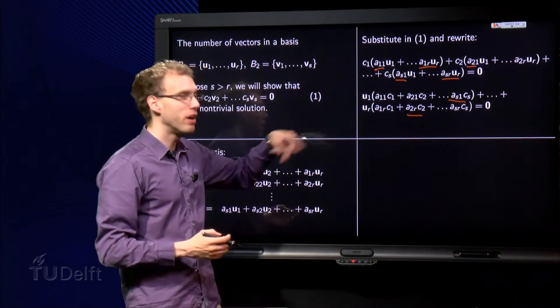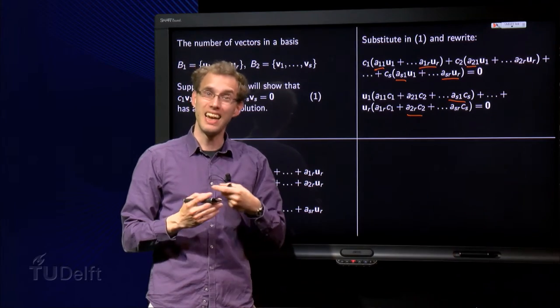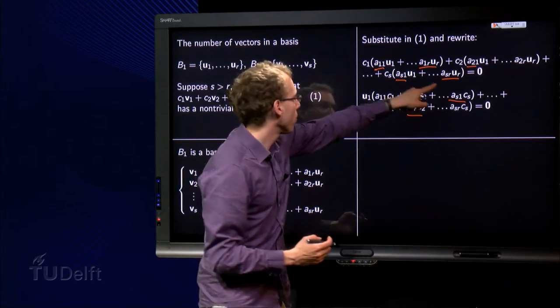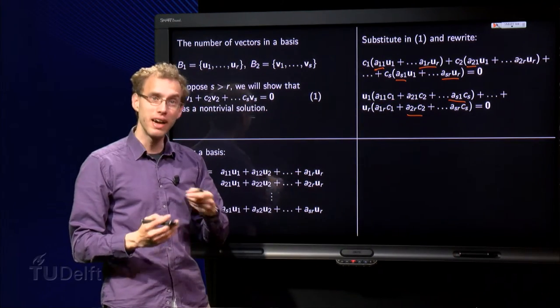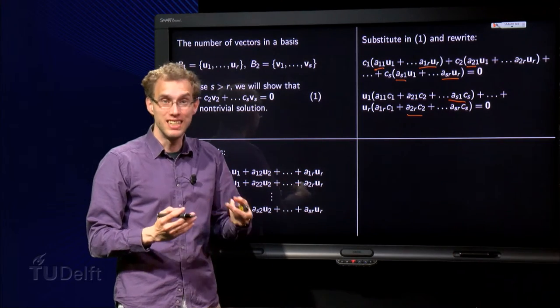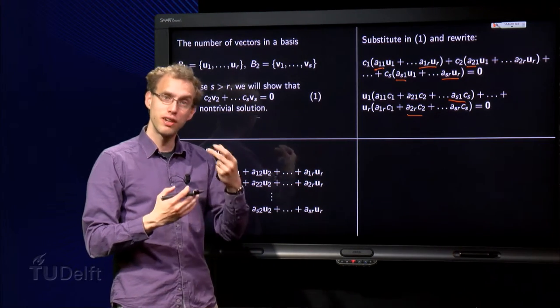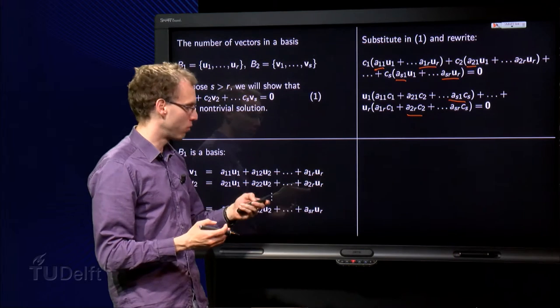But since u₁, u₂, u₃, etc. are independent, we know that all those big numbers between the brackets need to be zero. This vector equation only has a trivial solution.